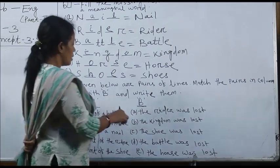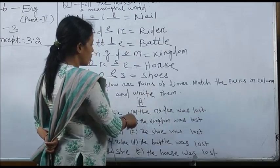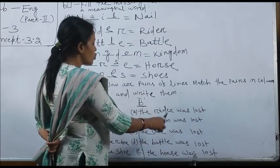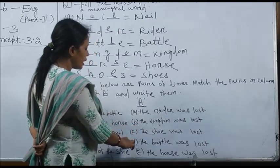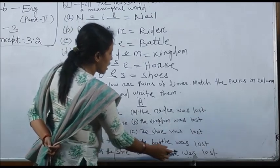In column B: the rider was lost, the shoe was lost, the battle was lost, the horse was lost.